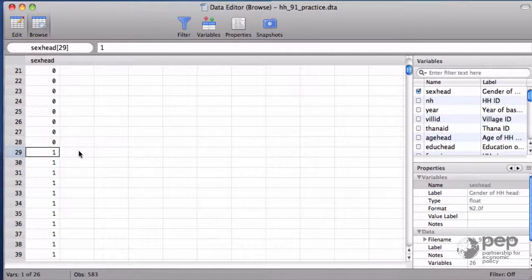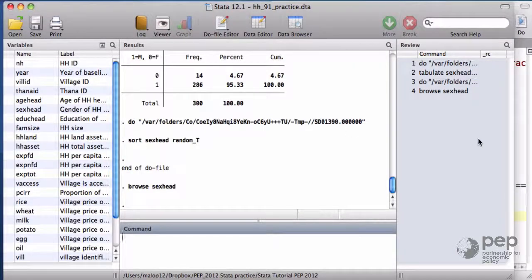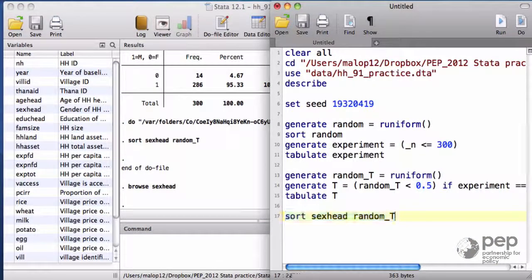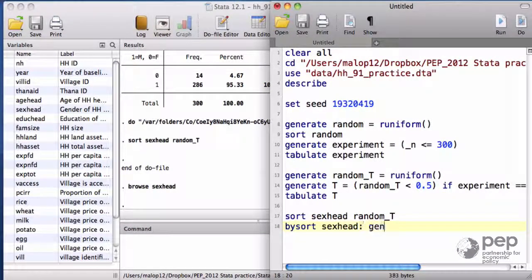As I explained before, the command by sort allows us to execute actions separately for various groups. Here are the female and male. It will generate a random variable, random_T_strat, that also comes from a uniform distribution.